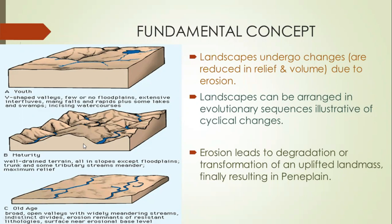The fundamental sequence goes from youth to maturity to old age. Landscapes undergo changes as relief is being reduced over time, primarily because of erosion — with riverine action being the main force. Fluvial landform features form a fundamental aspect of Davis's cycle of erosion. Landscape can be arranged in an evolutionary sequence illustrating cyclic changes, and the changes are systematic — it does not jump directly from youth to old age.